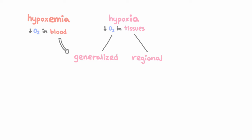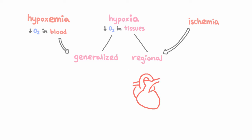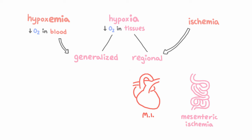Localized tissue hypoxia most commonly occurs when blood can't reach a certain tissue, which we call ischemia. Examples include hypoxia at the myocardium due to local ischemia — exactly what we see in an MI — mesenteric ischemia, or generally any state where local tissue demand for oxygen exceeds supply.